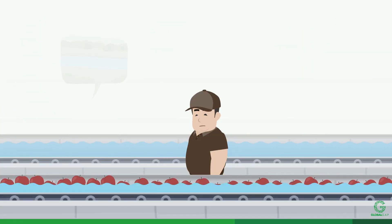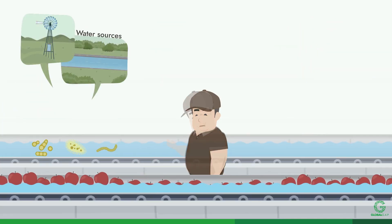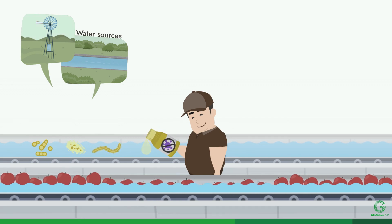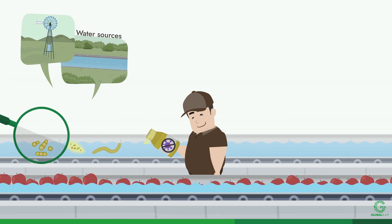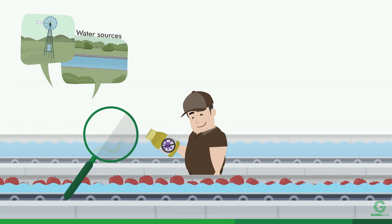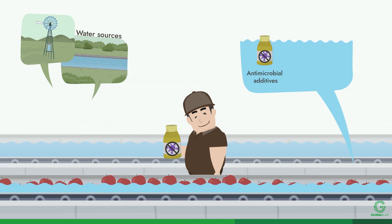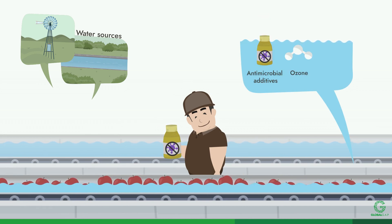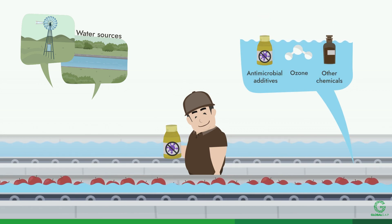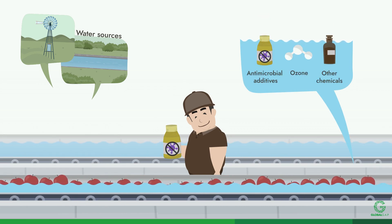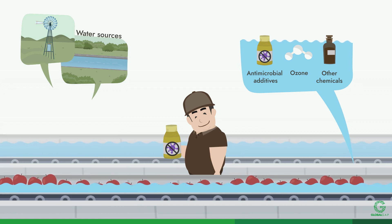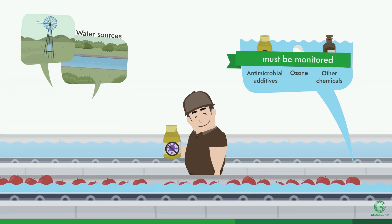Depending on the water source and quality, post-harvest water may be treated to reduce microbial contamination. Water treated with antimicrobial additives, ozone, or other chemicals during harvest and post-harvest activities — for example for cooling and in flumes — must be monitored.